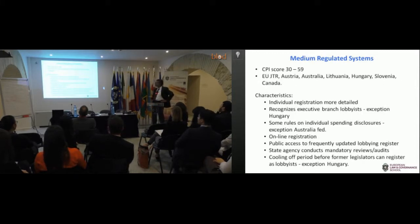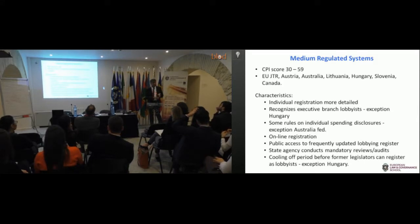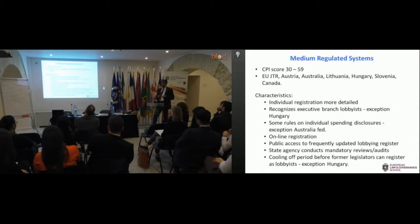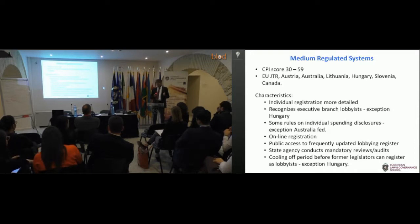In medium regulated systems, more information has to be given by lobbyists, cooling off periods exist in particular, there's stronger online registration, and a state agency will perform audits and could potentially give fines to lobbyists for breaking the rules. You find that in the new European Union Joint Transparency Register — not so much the fines, because it's not a mandatory system, but in terms of the detailed information being given by lobbyists. In the EU Joint Transparency Register, financial information has to be given as well.